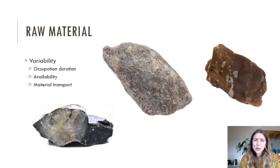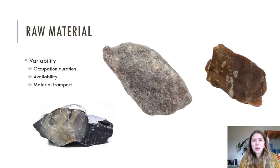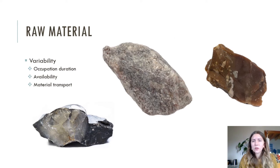Other areas of stone tool variability are often related to raw material. Common factors include raw material availability, differential transport of raw materials, and tool function. It is generally assumed that raw material variability will be dependent on occupation duration, with short-term sites exhibiting a higher degree of material variability compared to sites with long-term occupation. Non-local materials are going to be more common in short-term sites, while longer-term occupations would be more abundant in immediately available materials. Mobile groups have a larger range of resource exploitation, making them more likely to gather and transport material across long distances.